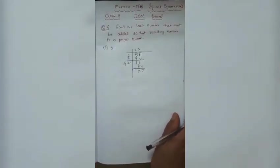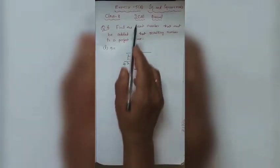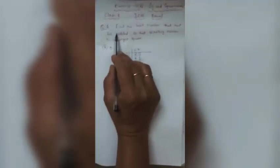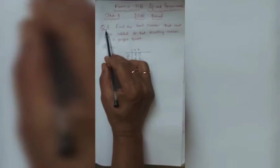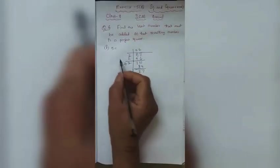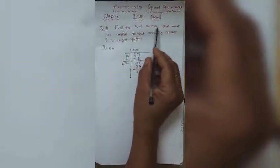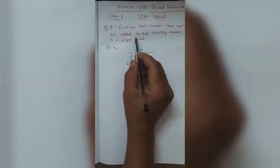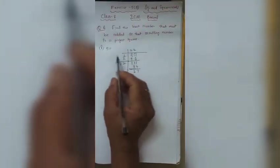Hello children, welcome to Mass Teaching Studio. This is Exercise 5B, continuation part, question number 6. Class 8 Mathematics, ICSE syllabus, chapter: Squares and Square Roots. The question is: find the least number that must be added so the resulting number is a perfect square.